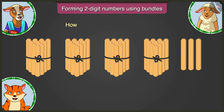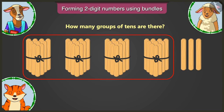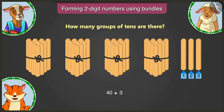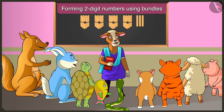Yes. How many groups of tens are there? There are four groups of tens, meaning four tens. Four tens means forty. Now besides the bundles of tens, how many sticks are left? There are three sticks left. Adding one, two and three to forty makes forty-three.